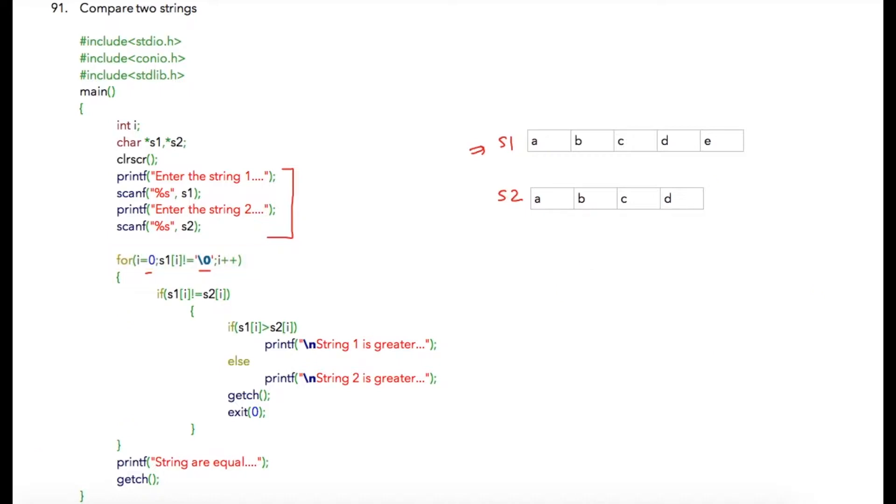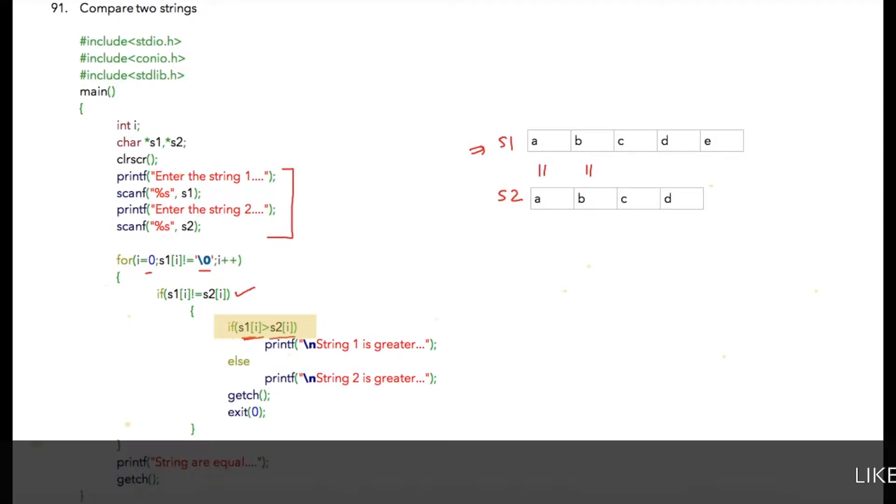Then we are going to compare both strings character by character. For each character, we check whether the current character from both strings is equal or not. If it is not equal, then we check if the current character in s1 is greater than the current character from s2. If it is greater, we can immediately print 'string 1 is greater', else we print 'string 2 is greater' and immediately exit, because there is no point checking subsequent characters.